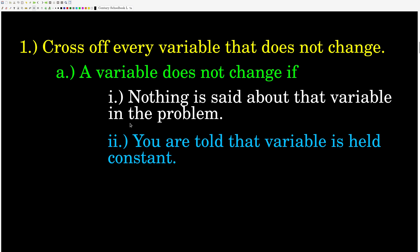In general, the first thing you want to do when you come to a combined gas law problem is read the problem and figure out what's not changing. If it doesn't change — the way you know is that nothing at all is said about that variable in the problem. If not a word is said about the number of moles, then N is constant, even though nothing's said about it. Or, you could be told that that variable was held constant.